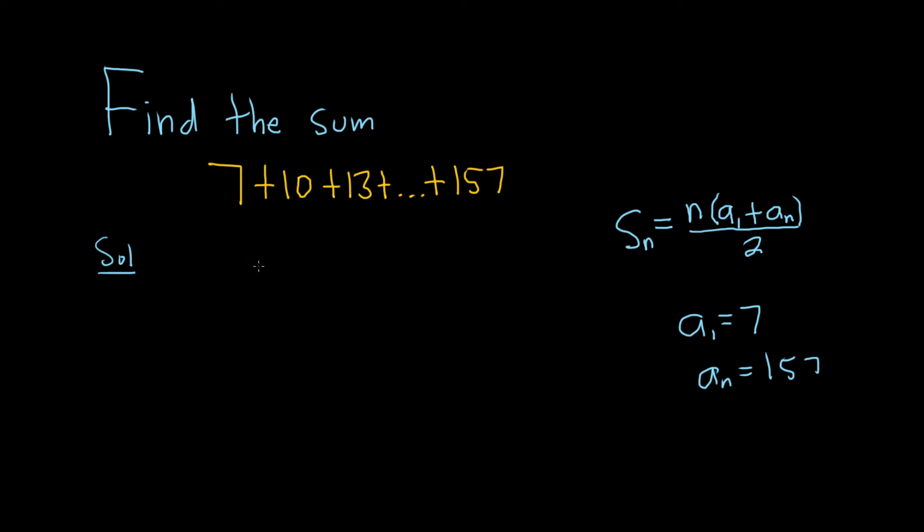So what we're going to do is use the formula for the nth term of an arithmetic sequence. It says that the nth term is equal to the first term plus n minus 1 times d, where d is the common difference.